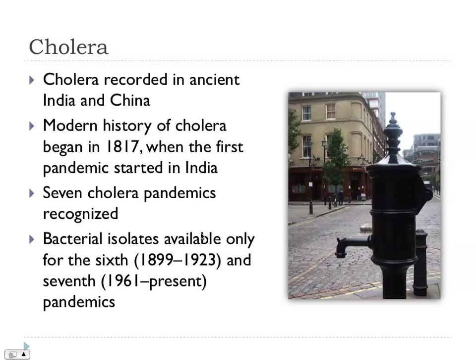Cholera seems to have been around for a long time in ancient India and China. Modern history begins in 1817 when the first pandemic started in India, and since then there have been seven cholera pandemics recognised. This pump here is a memorial to John Snow's pioneering efforts in tying down the cause of cholera to contaminated water. They rebuilt the pump and left the handle off as a tribute to John Snow. There's actually a John Snow Pub nearby, and a John Snow Society whose sole requirement is that whenever you go to London, you have a drink in that pub.